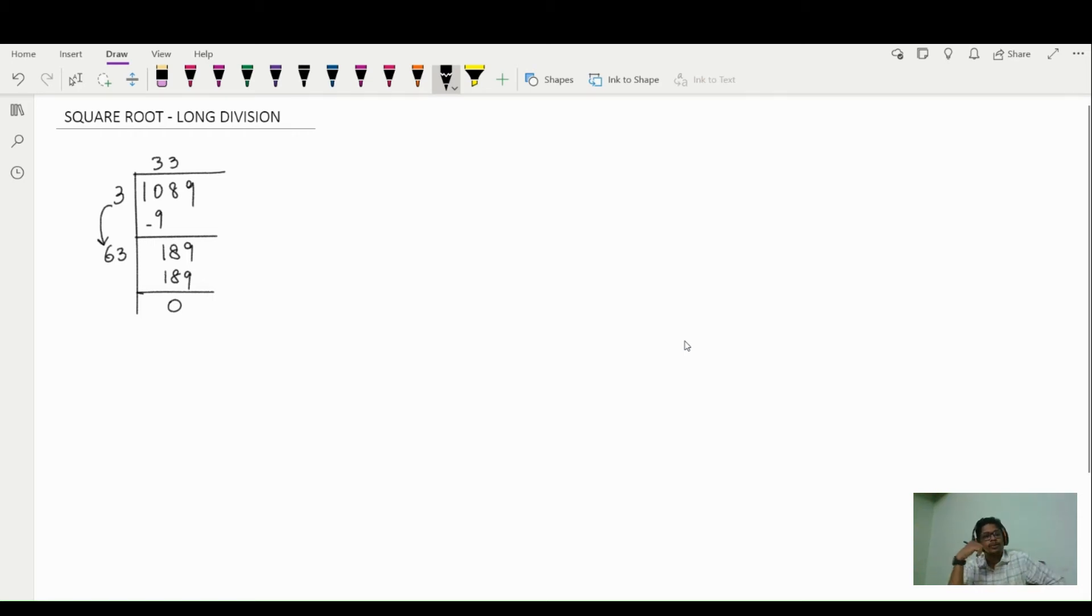Hello, I am Shipran. So I am here with a question. I have used long division method to find the square root of a number. That is 1089 and the square root is 33.